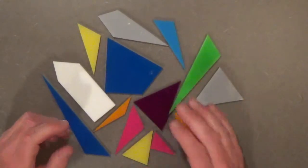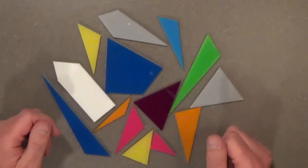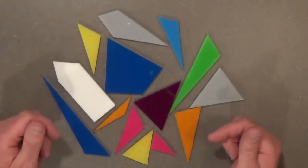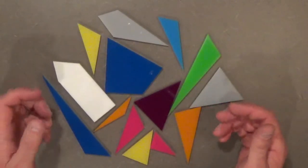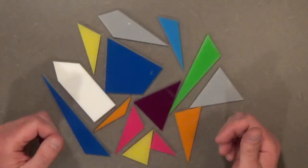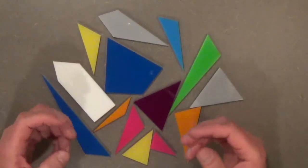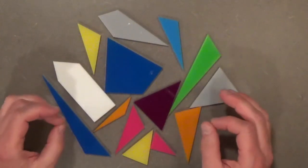This puzzle goes by a number of different names, but most popular is probably the name Stomachion. It also goes by the name Ostomachion, Syntomachion, and Loculus Archimedeus, which translates to Archimedes' Box.